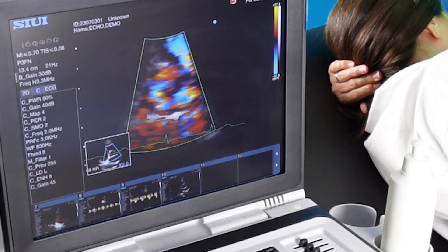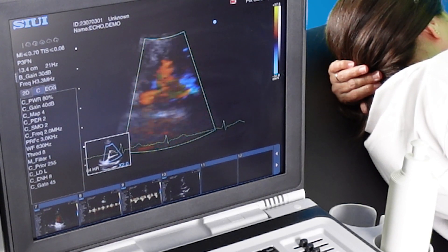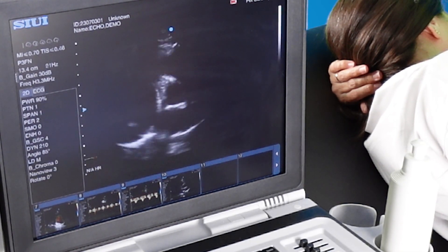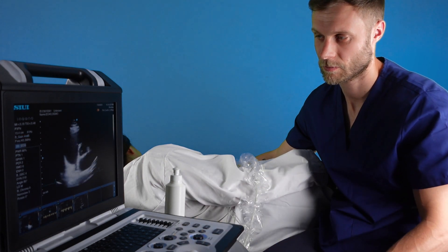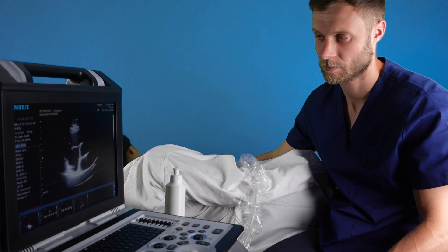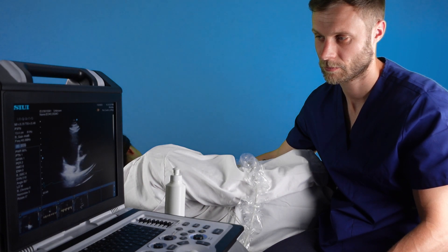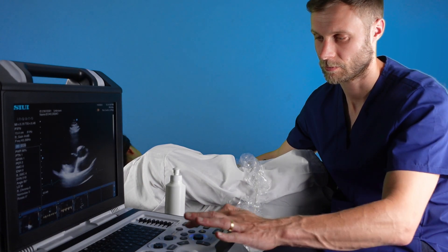Color Doppler to confirm the presence or absence of regurgitation or turbulence. You can get the tricuspid valve again from this view. It's always a good idea when examining the tricuspid valve to image it from multiple perspectives.